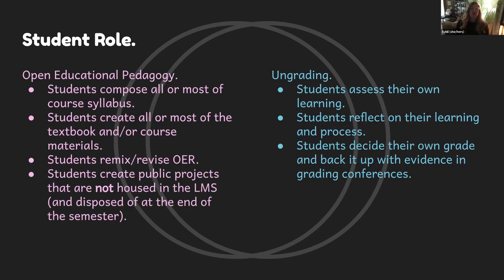Back to the student role. In OEP, students compose maybe all or most of the course syllabus. They might create all or most of the textbook or course materials. They might remix and revise OER, and they might also create public projects not housed in the LMS — Heather Maselli has a great project with that on Twitter. With ungrading, students are reflecting, assessing themselves, and deciding their own grade, backing it up with evidence — which teachers might use grading conferences for.